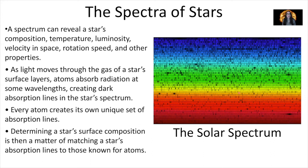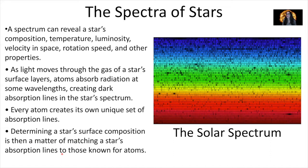We've already talked about spectra. A spectrum of a star can reveal a star's composition, temperature, luminosity, its speed, its rotation on its axis, and other properties. Light moving through the gas of the star's surface layers causes atoms in that atmosphere to absorb radiation at some wavelengths — that's an absorption spectrum. You remove some parts of the full rainbow of the electromagnetic spectrum and create those dark absorption lines in the star's spectrum. Every atom creates its own unique set of absorption lines, so determining a star's surface composition is a matter of matching a star's absorption lines to those we know for atoms.